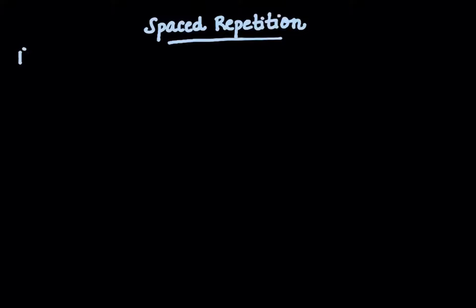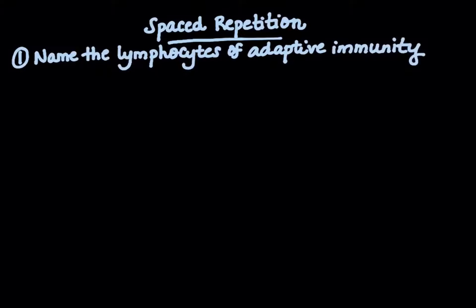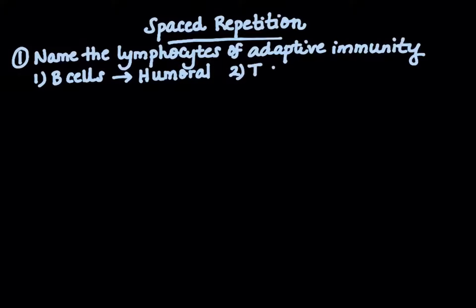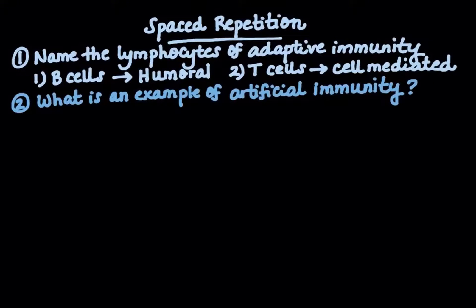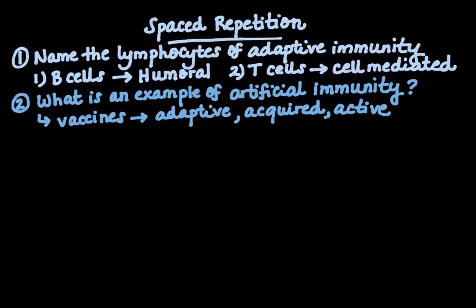First question: name the lymphocytes of your adaptive immune system. There are two types — B cells, involved in your humoral immune system, and T cells, involved in your cell-mediated immune system. Next question: what is an example of artificial immunity? Vaccines — which we'll discuss next. This is part of your adaptive, acquired, active immune system — your four A's all go together.